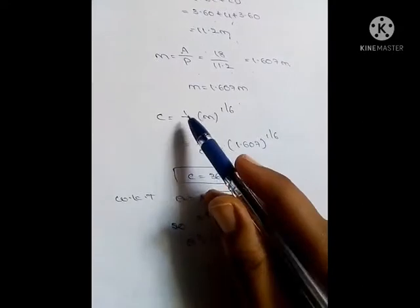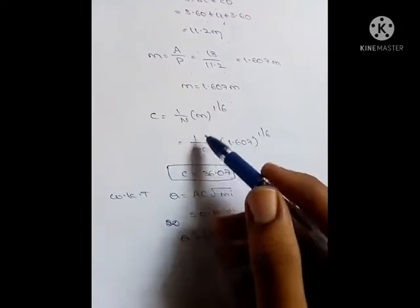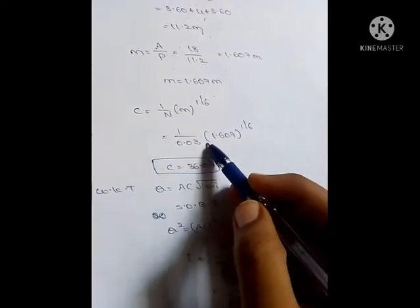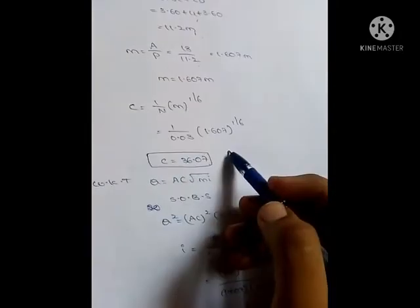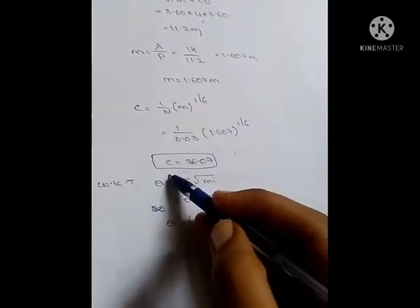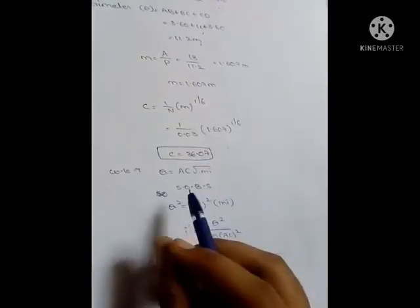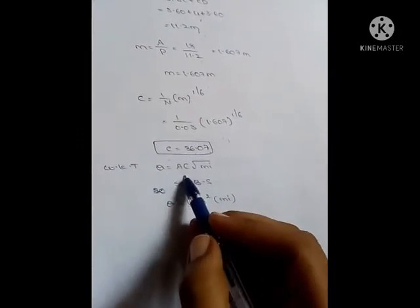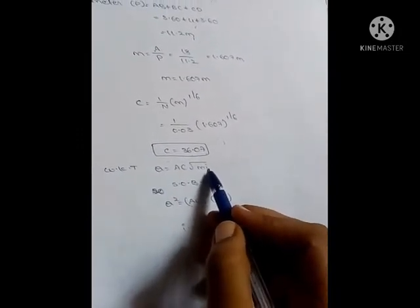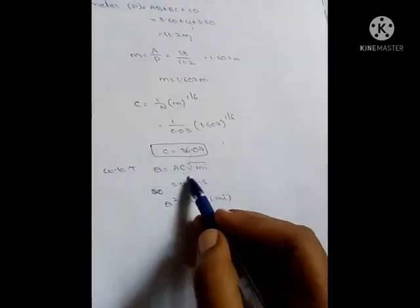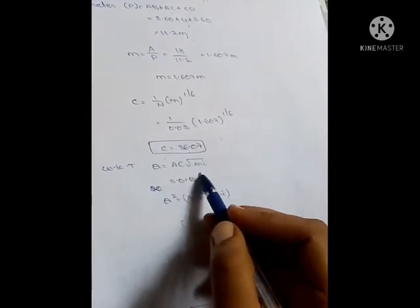According to Manning's formula, C equals (1/n) into M^(1/6). With n equal to 0.03 and M equal to 1.607, C equals 36.07.